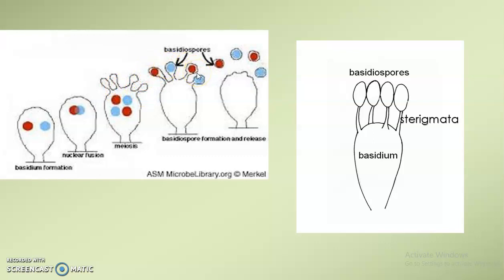On the tip of each sterigma we can see basidiospores, which are later released into the environment so that new organisms are produced. A single basidium bears four basidiospores.